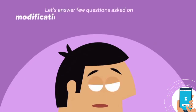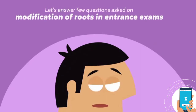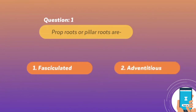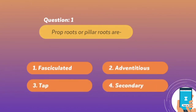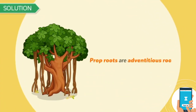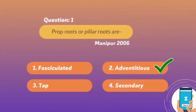Let's answer a few questions asked on modification of roots in entrance exams. Question 1: Prop roots or pillar roots are — 1. Fasciculated, 2. Adventitious, 3. Tap, 4. Secondary. This question was asked in Manipur, 2006. Solution: prop roots are adventitious roots and are modified for support. Hence, option 2 is correct.